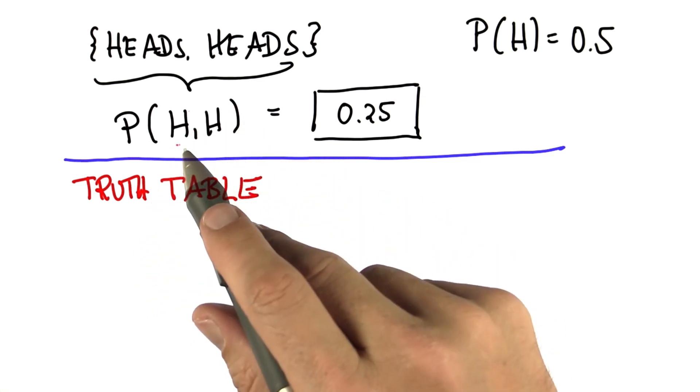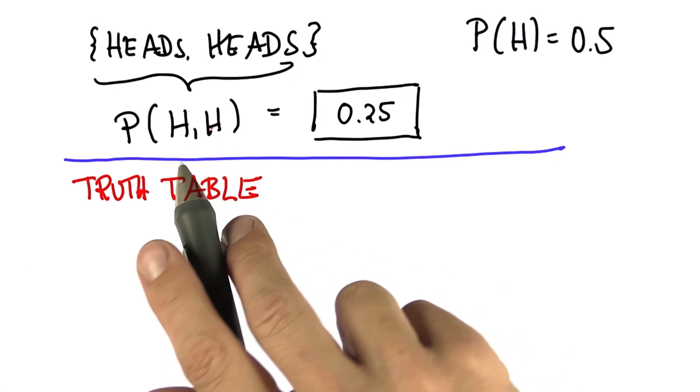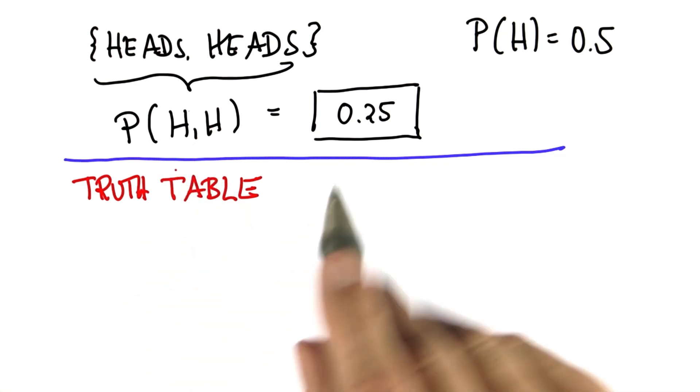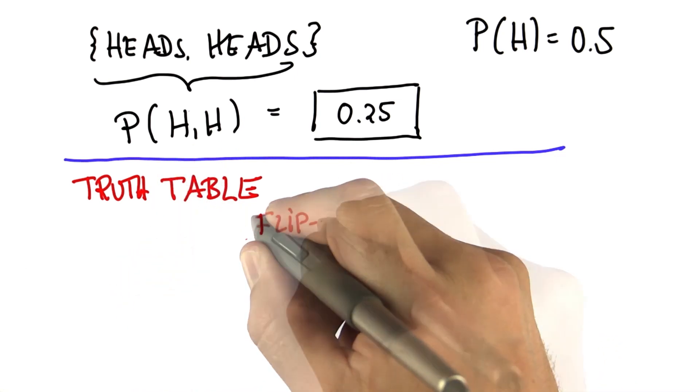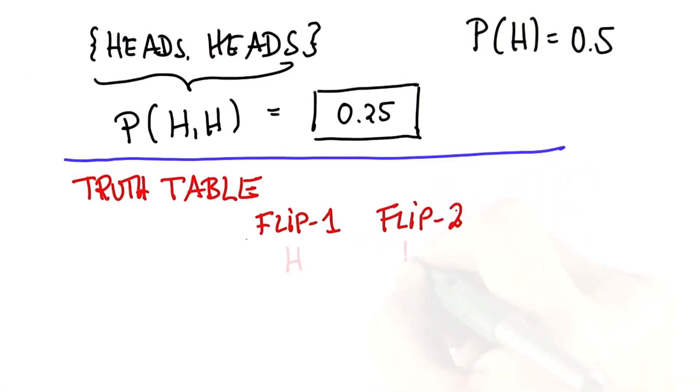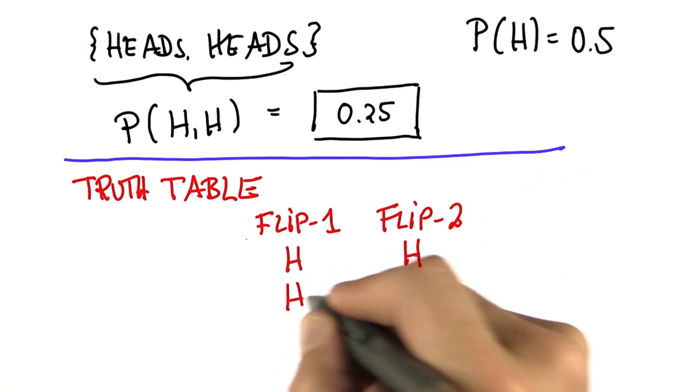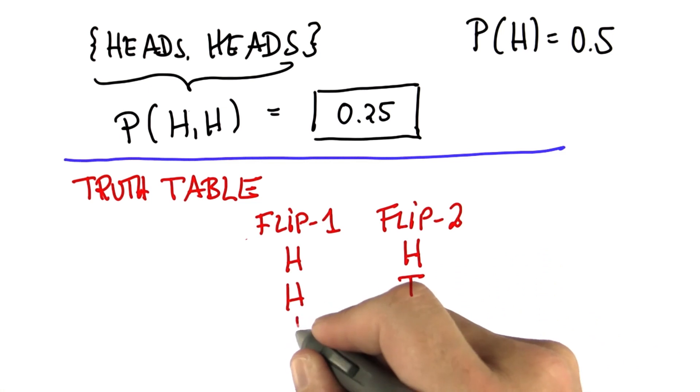In a truth table, you draw out every possible outcome of the experiment that you conducted. There were two coin flips, flip one and flip two, and each had a possible outcome of head head, head tail, tail head, and tail tail.